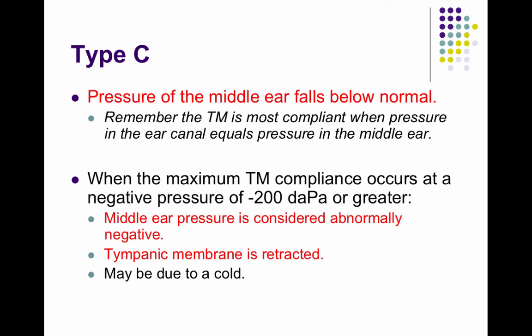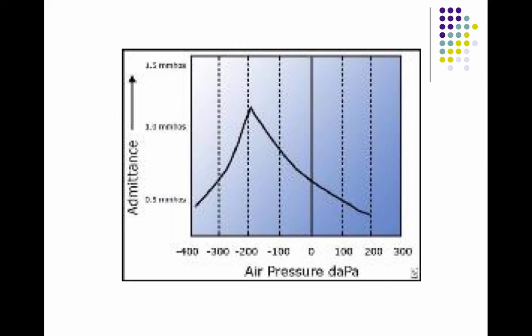There's also a type C tympanogram, where the pressure in the middle ear is negative. The point of greatest compliance is found at a negative pressure, not at normal atmospheric pressure. This might mean the tympanic membrane is retracted — for example, you have a cold, you're all stuffed up, and your ears feel full or different. That would be a type C tympanogram, where the point of greatest admittance is at negative pressure, not at zero deca-pascals.